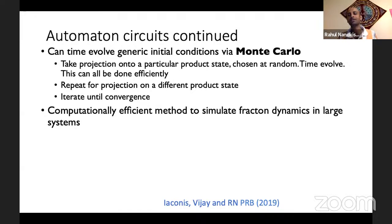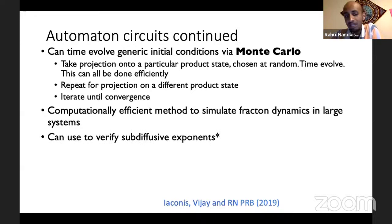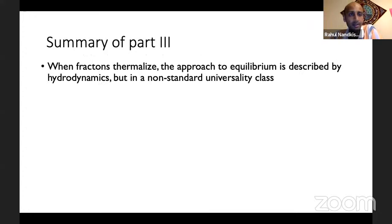One way to think about this: you may know that Clifford dynamics can be simulated efficiently because it maps products of Pauli operators to products of Pauli operators, so it doesn't generate entanglement in the operator basis. This automaton construction is the state analog of that. Clifford dynamics doesn't generate entanglement in the operator basis but does in the state basis. Automaton dynamics doesn't generate entanglement in a particular state basis, but does generate entanglement in the operator basis or any other state basis. You can use this to verify sub-diffusion and characteristic scaling exponents for relaxation.